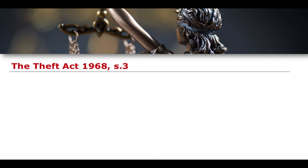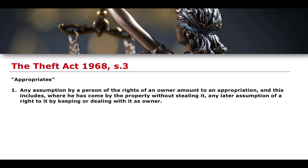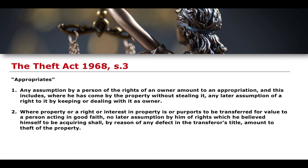Section three looks like this. It says the word 'appropriates': any assumption by a person of the rights of an owner amounts to an appropriation, and this includes where he has come by the property without stealing it — any later assumption of the right to it by keeping or dealing with it as owner. Where property or a right or interest in property is or purports to be transferred for value to a person acting in good faith, no later assumption by him of rights which he believed himself to be acquiring shall by reason of any defect in the transferor's title amount to theft of the property.